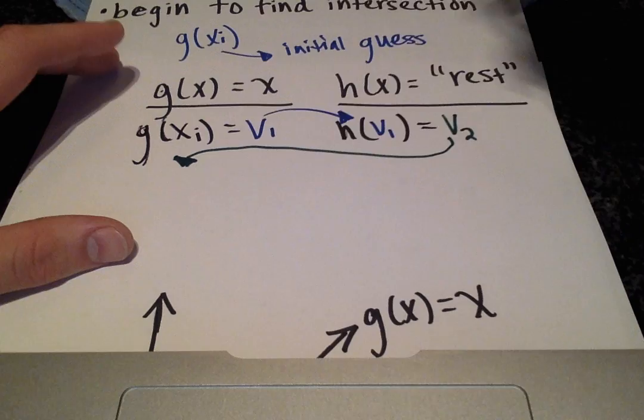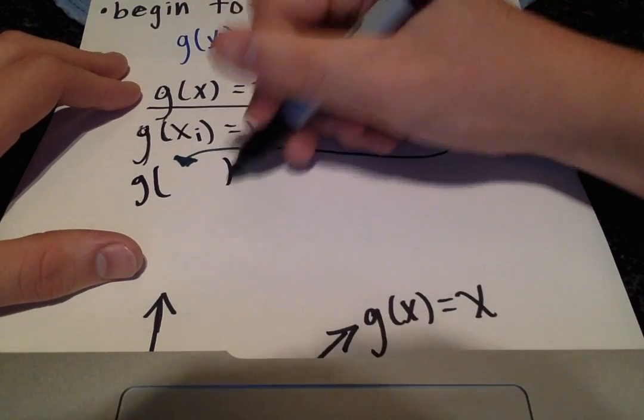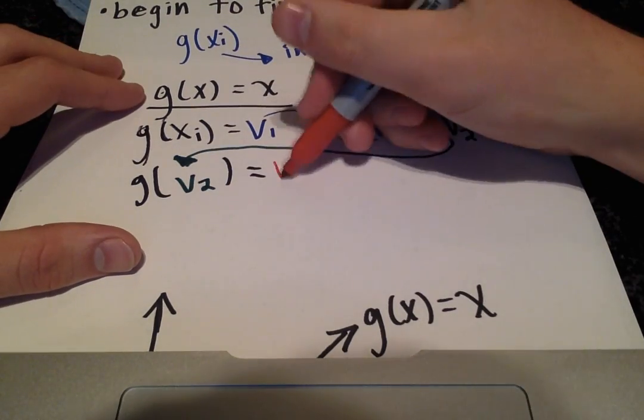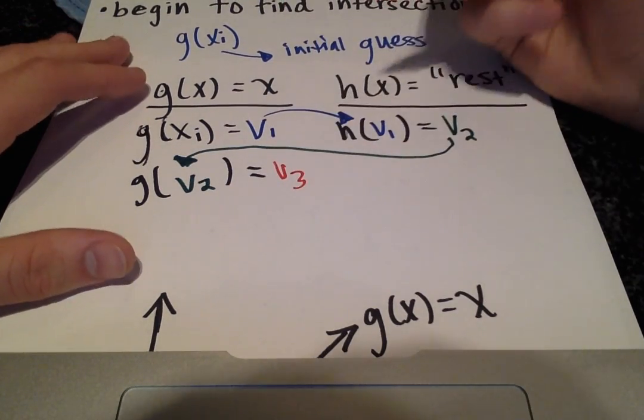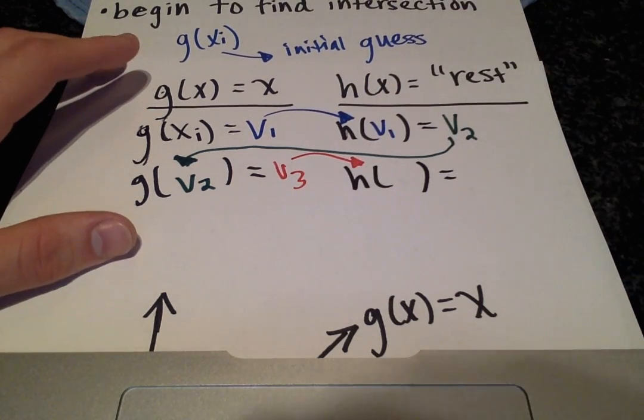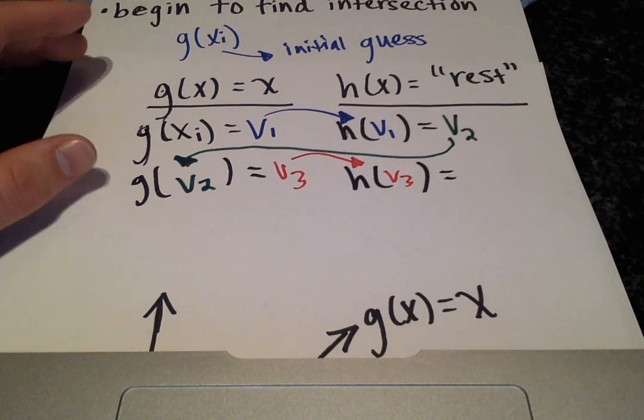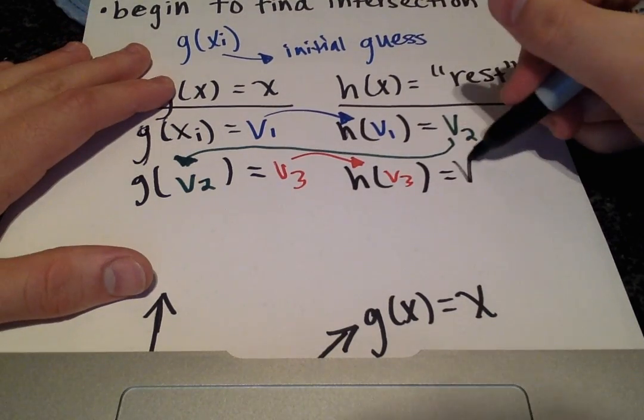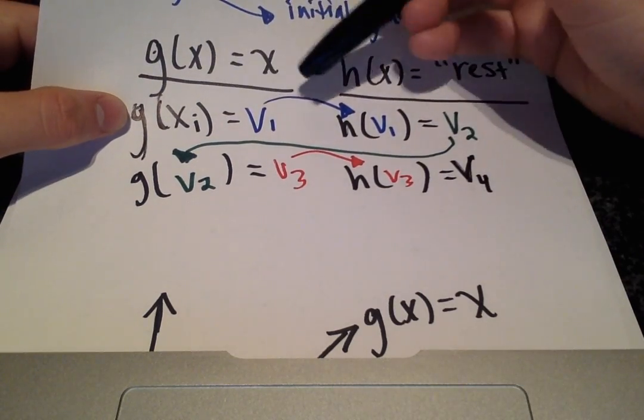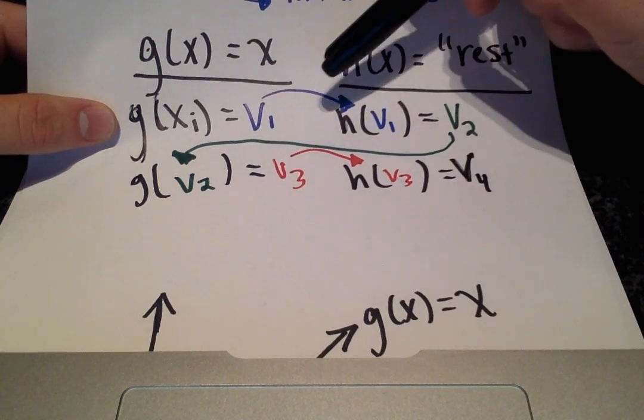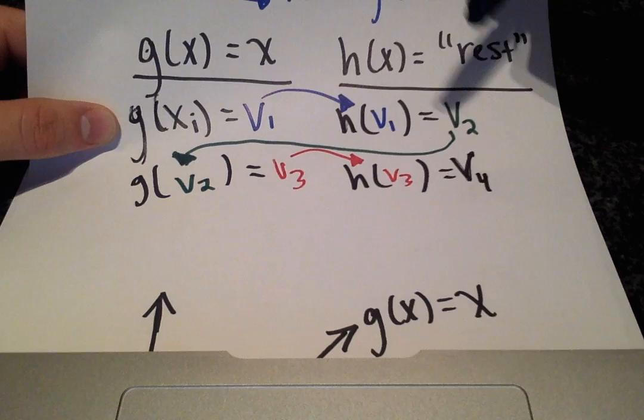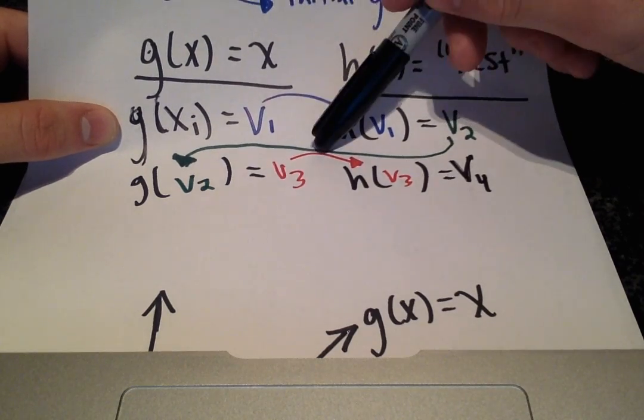What you're going to do is plug this new value into g(x), and then this will give you a new value again, and that will be plugged back into h(x) to give you a new value again. Basically what we're doing is starting with our initial guess, plugging into g(x), getting a result, plugging that result into h(x), plugging the result of h(x) back into g(x). You're going to keep plugging the result of one equation into the other.